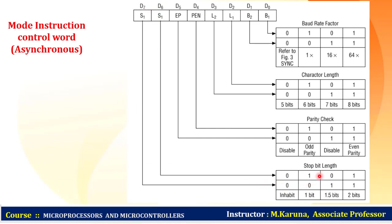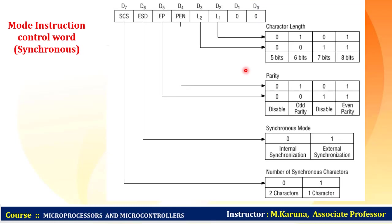Bits D6-D7 indicate the stop bit length for asynchronous transmission: 00 = inhibit, 10 = 1 stop bit, 01 = 1.5 stop bits, 11 = 2 stop bits. So for asynchronous data transmission, all these character features — baud rate, character length, parity, and stop bits — must be specified in the mode word.